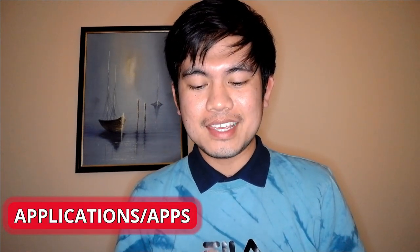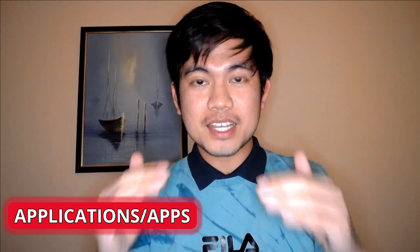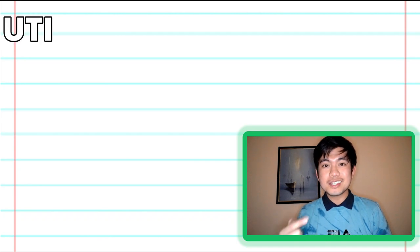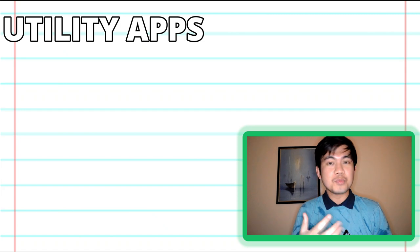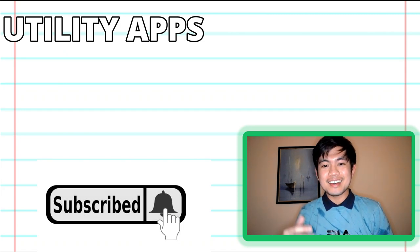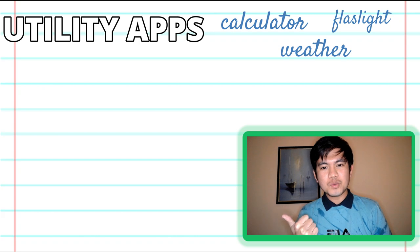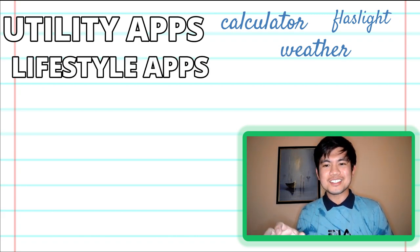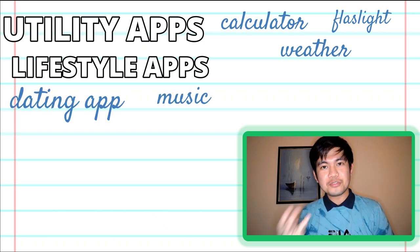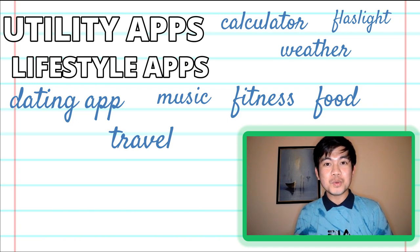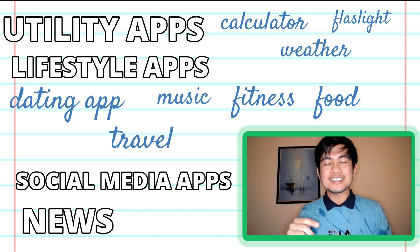Let's talk about applications or apps. There are so many kinds of apps, and the best thing we can do is categorize them. First, we have utility mobile apps — the apps on our smartphones we don't realize are apps, like calculator, flashlight, and weather. The second is lifestyle apps, which refer to dating apps, music, fitness, food, and travel. And the most common ones: social media apps and news apps.